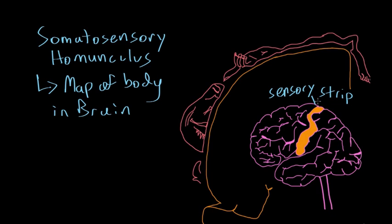If we were to take a cross-sectional look at the sensory strip — if we cut the brain right down the middle — what we would see is this large orange structure. This orange structure is basically just the sensory strip viewed from that cross-section. As mentioned, this sensory strip contains a somatosensory homunculus, which is basically a map of the body in the brain.